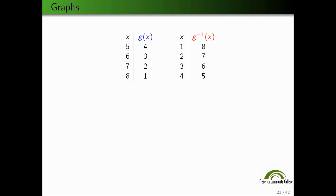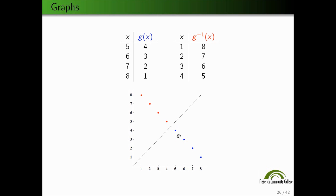Similarly, let's do the same thing with the graphs of g and g inverse. Here's the graph of g: 5 gets mapped to 4, 6 gets mapped to 3, 7 gets mapped to 2, and 8 gets mapped to 1. And here in red we have g inverse: 1 gets mapped to 8, 2 gets mapped to 7, 3 gets mapped to 6, and 4 gets mapped to 5. Let's put the line y = x in there to see the reflection across the line y = x — this point corresponds to that point and reflects directly across.